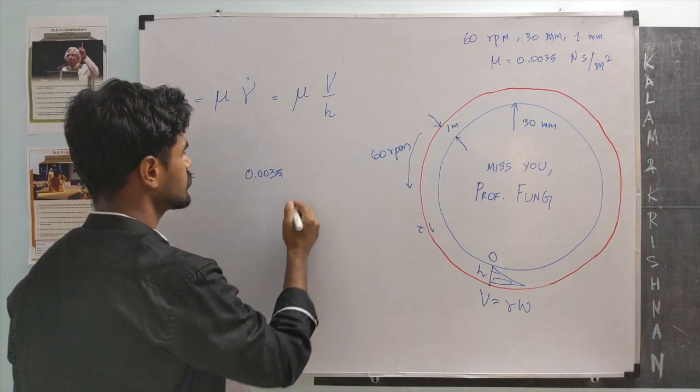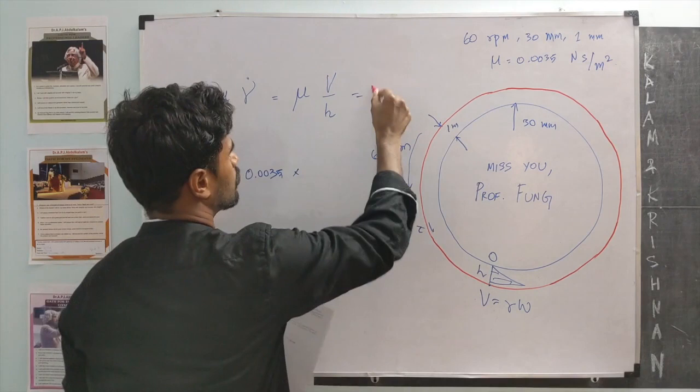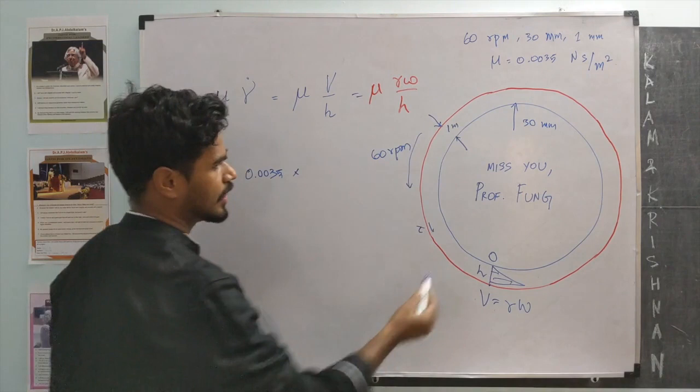That times velocity is. So, this is mu times r omega over h. So, the radius of the outer wall is 30 plus 1, 31 mm.